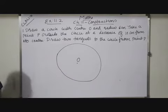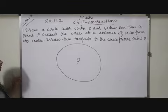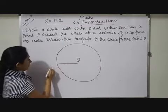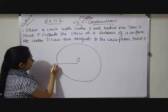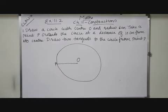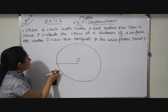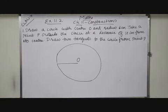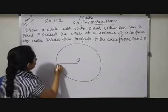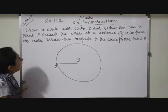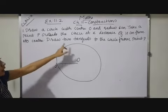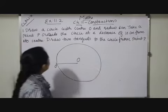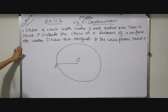Now after completing this step what I should do? Let me draw a radius and here give a name O and this one O dash. After that take a point P outside the circle at a distance of 10 cm from its center.